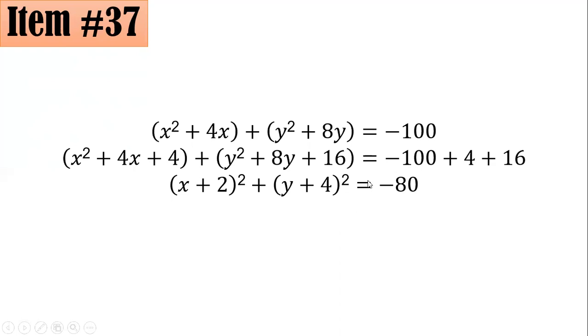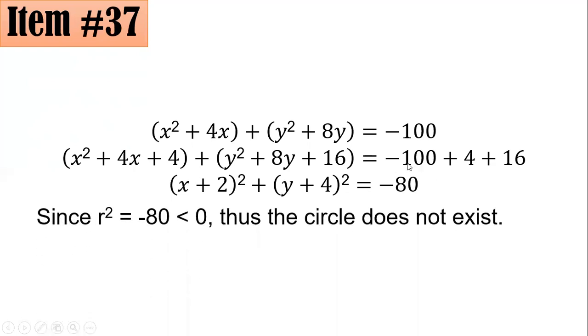Remember, this is your R². But since R² is -80, R is not a real number because there's no real number that when squared becomes negative. Thus, this circle cannot have a real radius and cannot exist. Hence, letter B is the answer.